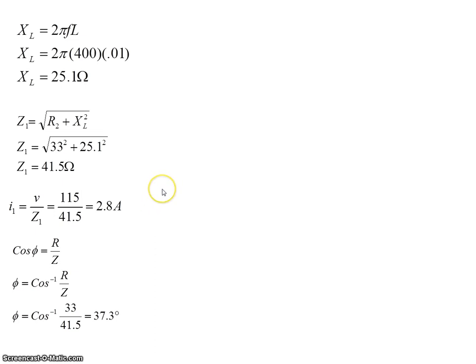The phase angle between the voltage and the current. That's got from the formula cosine φ is equal to R over Z. So therefore φ is the inverse cos of R over Z. And putting the value of 33 ohms for the resistor and 41.5 for Z here, that gives me a phase angle of 37.3 degrees.